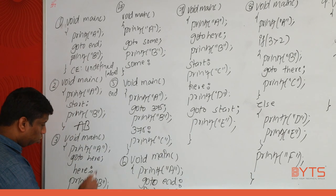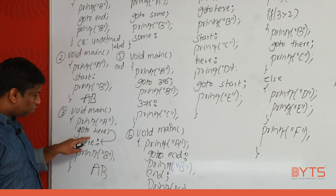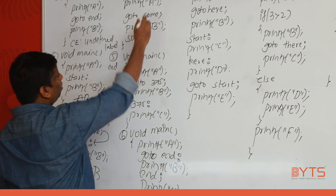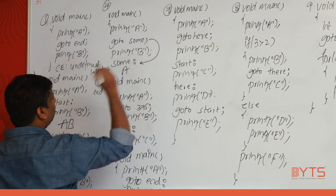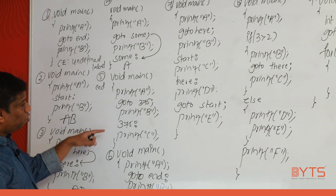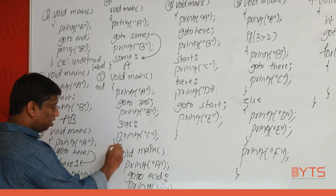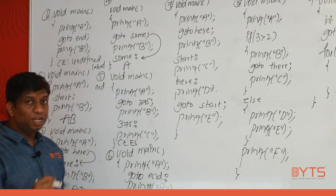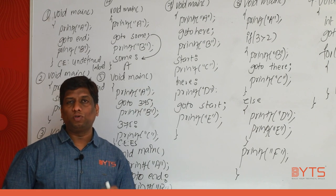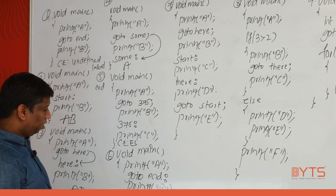In another example, goto goes directly to a label with no statements in between — nothing happens and B is printed. Conclusion: if there is no statement between goto and the label, nothing will happen. Also, a label is not required to have any statement after it. In another case, goto 375 — this gives a compilation error because a label name must start with an alphabet or underscore, not a number.